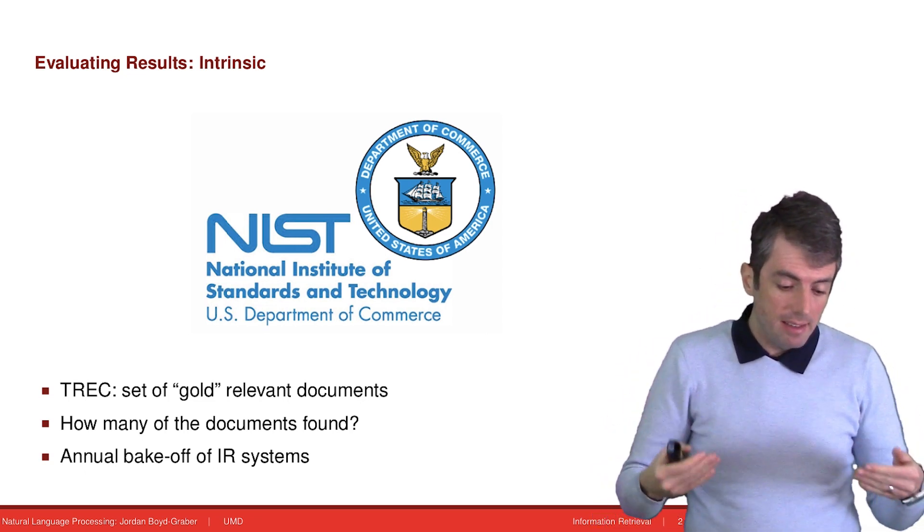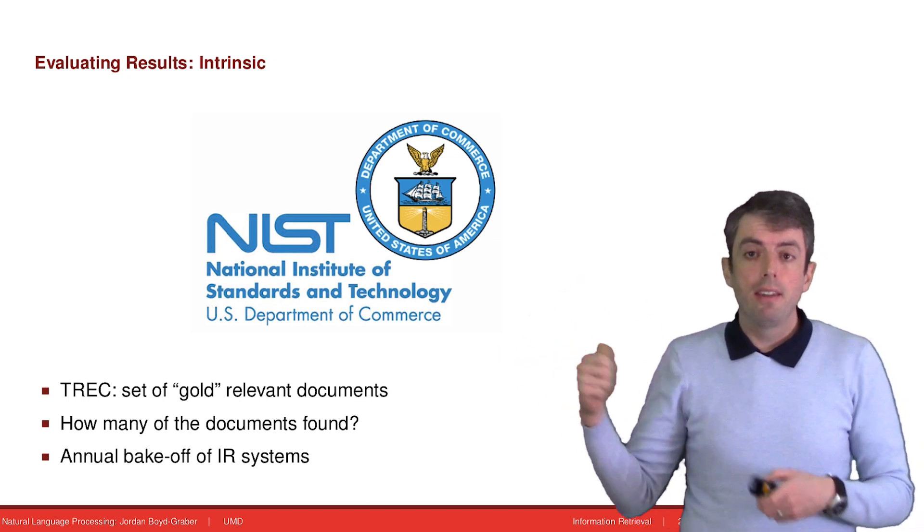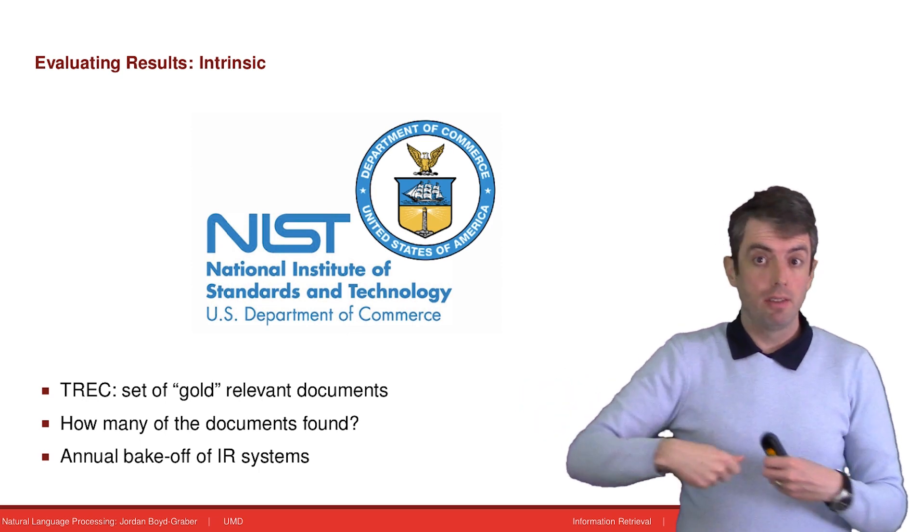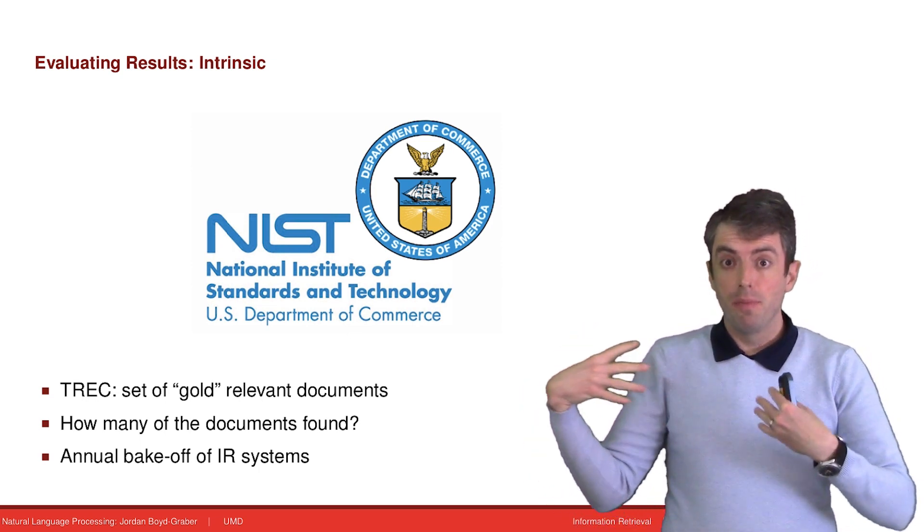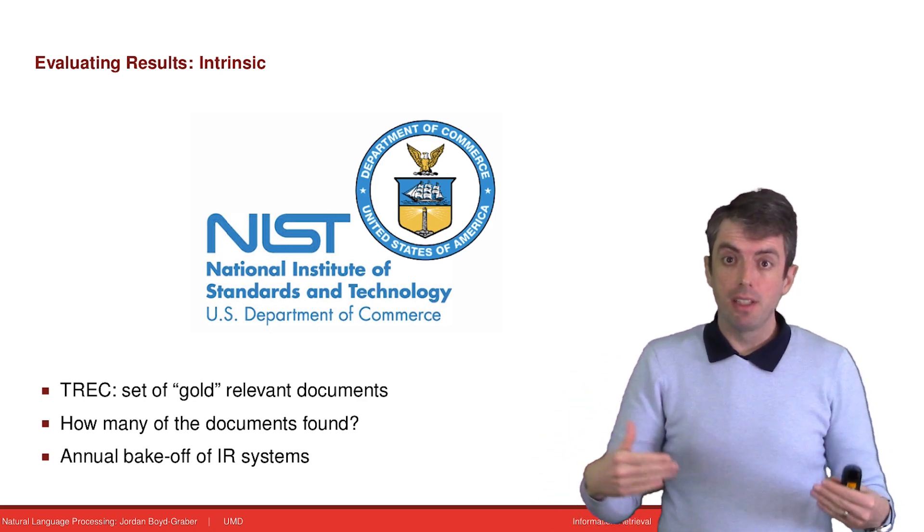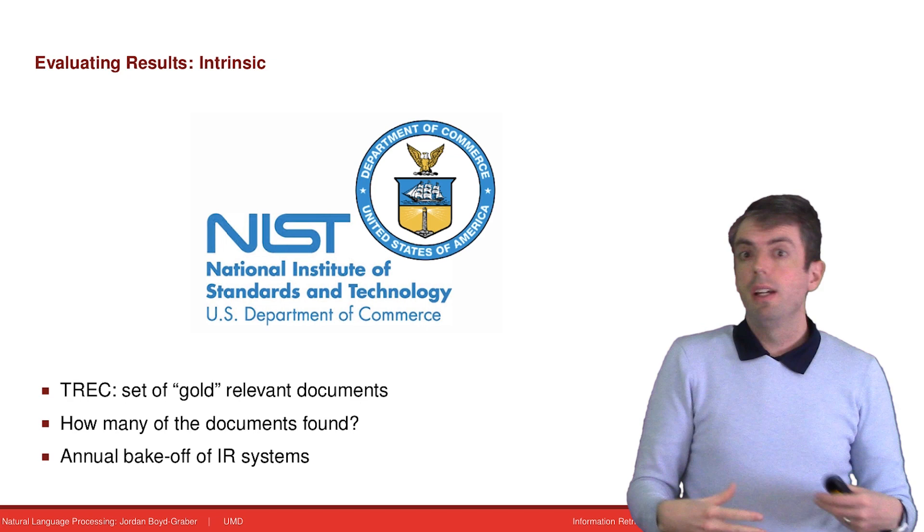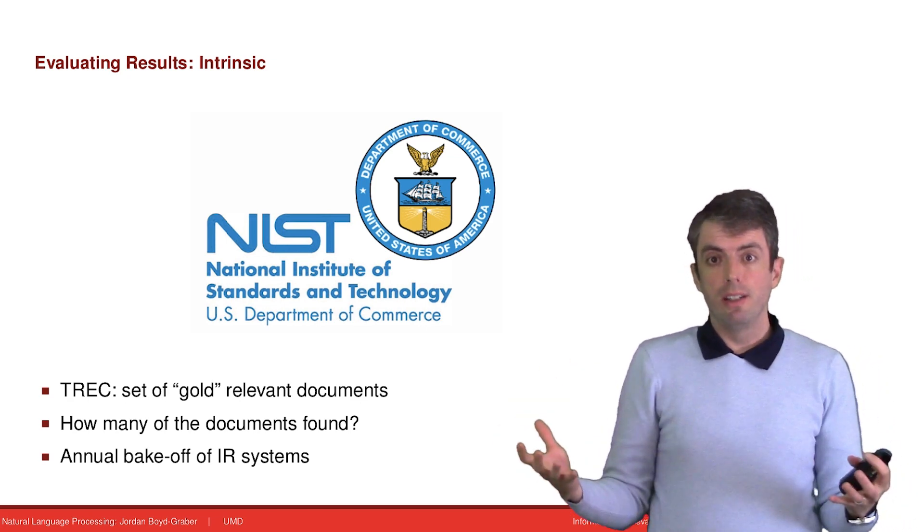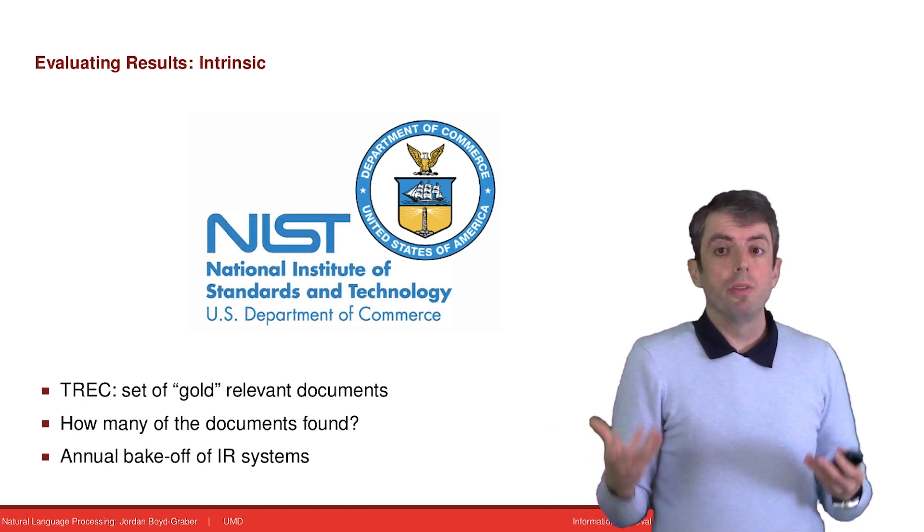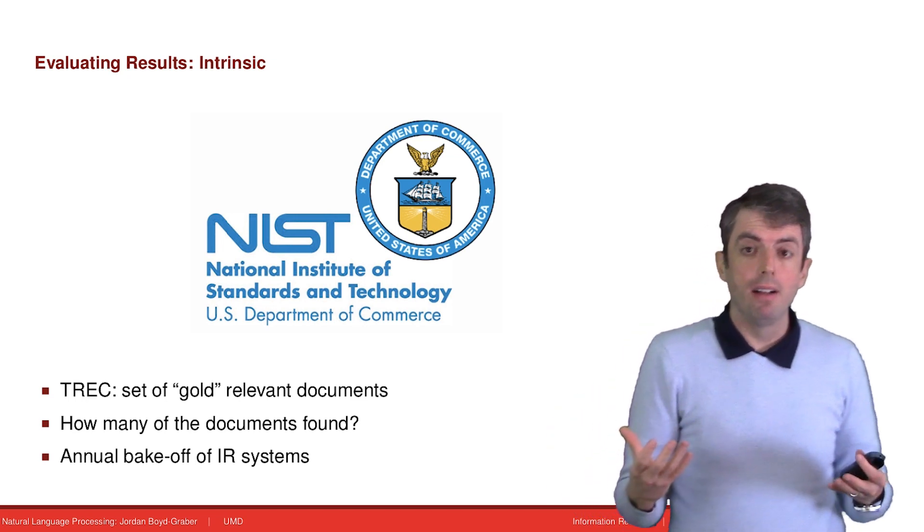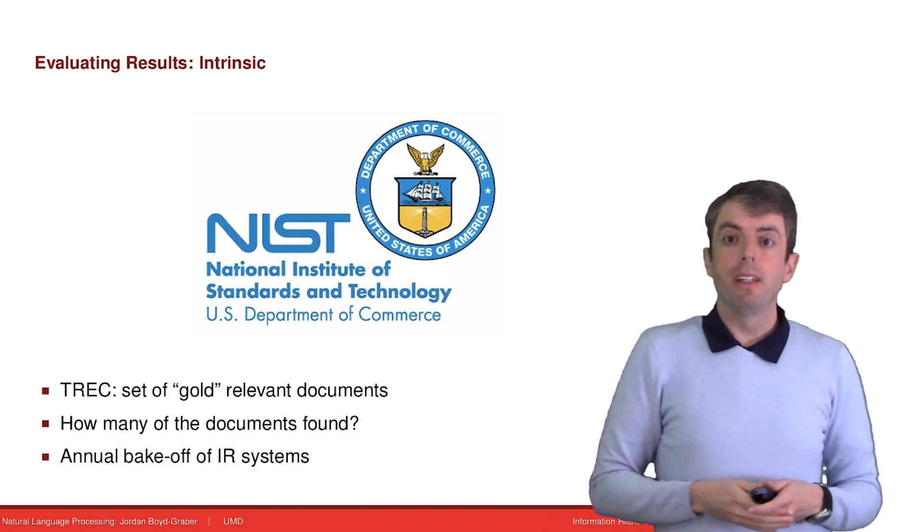And here, they painstakingly built collections with queries, and then they combed through a bunch of documents to try to find which of the documents are actually relevant to the query. So actually finding ground truth to this very large needle in a haystack problem. Once you have these ground truth documents, how well did your system do given the set of results that it returned?